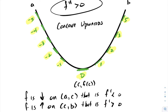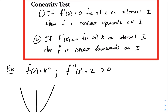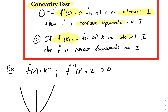Let's summarize the results. We have the concavity test: if you have a function f at x such that its second derivative is greater than zero on an interval i, then that function is said to be concave upwards on that interval. If the second derivative is less than zero on an interval i, the function will then be said to be concave downwards.